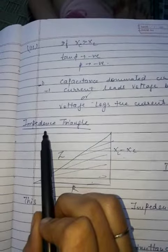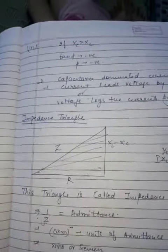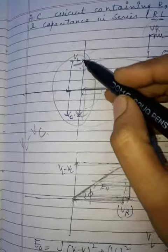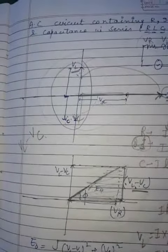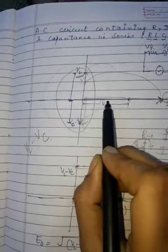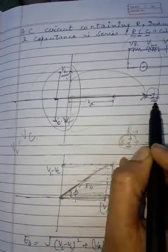So now we will do the next topic, impedance triangle. In the previous topic we took VL minus VC. In an inductor, voltage current is 90 degrees ahead. In a capacitor, voltage is 90 degrees behind current. In resistance, voltage and current are in the same phase.